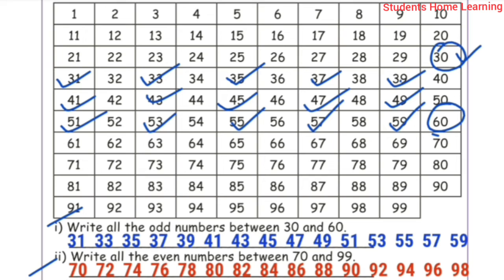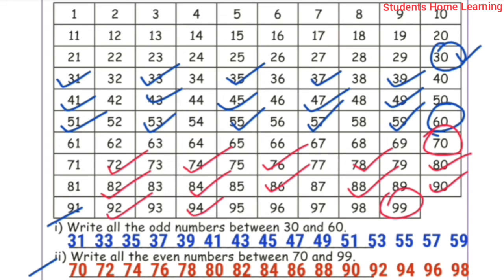Write all the even numbers between 70 and 99. 70 is an even number, so we start there. The even numbers are: 70, 72, 74, 76, 78, 80, 82, 84, 86, 88, 90, 92, 94, 96, 98. Note that 99 is an odd number. These are all the even numbers between 70 and 99.